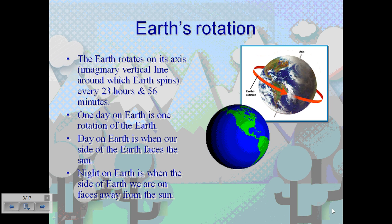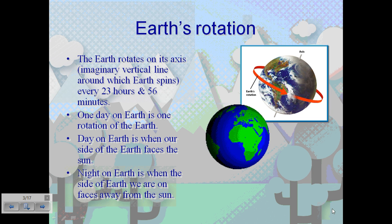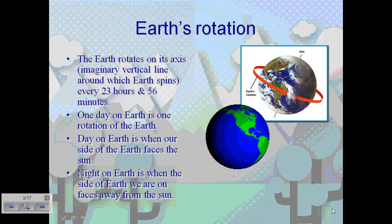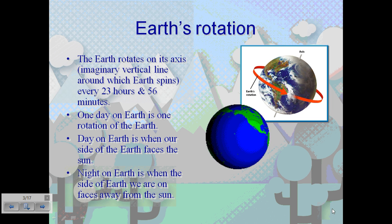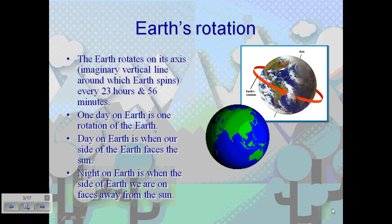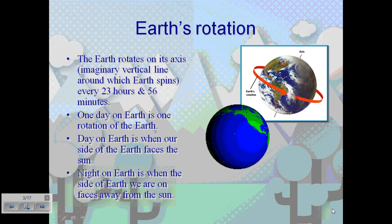Now, the typical Earth's rotation. The Earth rotates on its axis — an imaginary vertical line around which Earth spins. This happens every 23 hours and 56 minutes, or 24 hours if you want to approximate. One day on Earth is one rotation of the Earth. A day on Earth is when our side of the Earth faces the sun, and night is when the side we are on faces away from the sun.